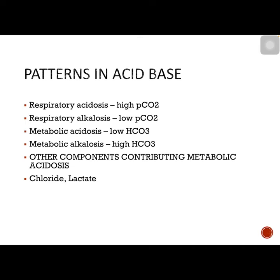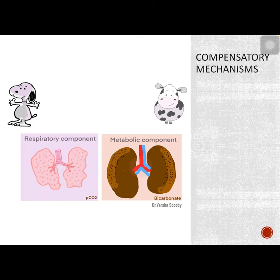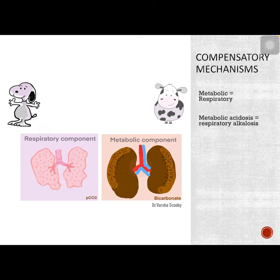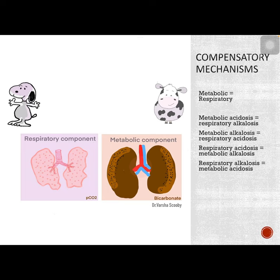Chloride and lactate can also contribute to metabolic acidosis — remember hydrochloric acid and lactic acid. Compensatory mechanisms are always double opposites: metabolic will be compensated by respiration, and acidosis will be compensated by alkalosis. So metabolic acidosis is compensated by respiratory alkalosis, metabolic alkalosis by respiratory acidosis, respiratory acidosis by metabolic alkalosis, and respiratory alkalosis by metabolic acidosis. The organs involved are the kidneys and lungs.